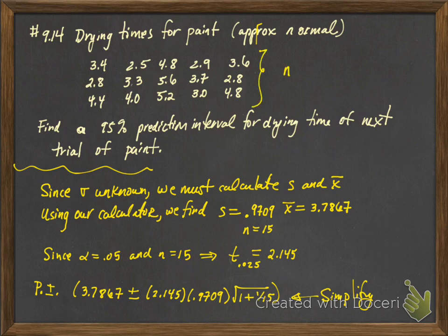We see that n is equal to 15. We want to find a 95 percent prediction interval for drying time of the next trial we run on paint drying time. And we're assuming that the paint drying time follows approximately normal distribution.